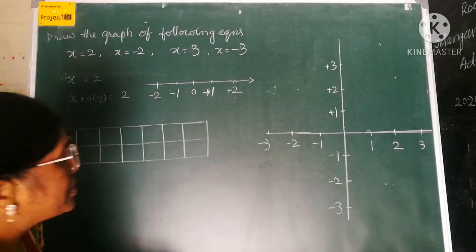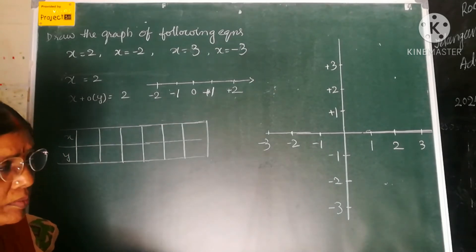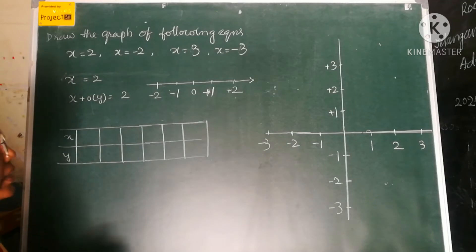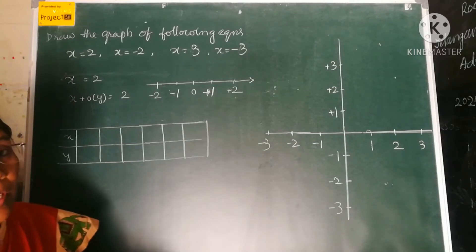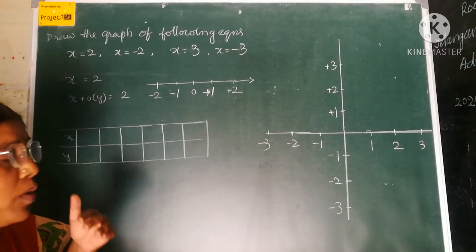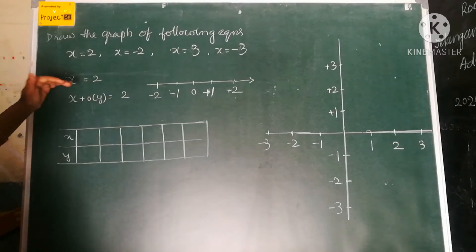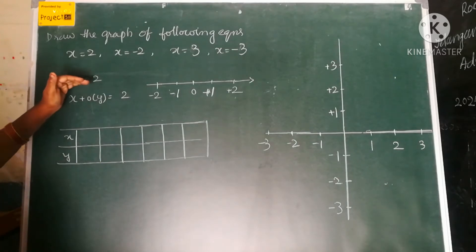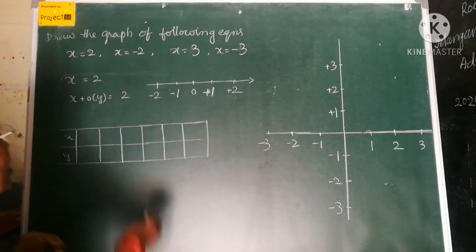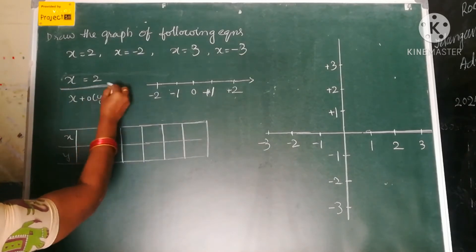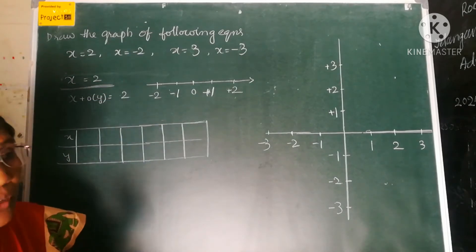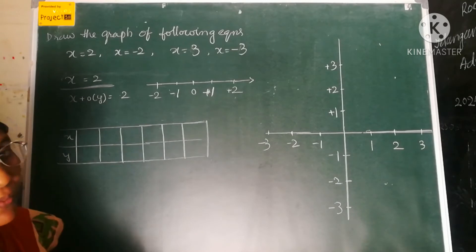Now let us see. In the last class I said how can we represent a one-variable equation on a number line, and how can we convert a one-variable equation into two variables. Let us see now. We have taken this problem: x is equal to 2. You know, it is a one-variable equation.